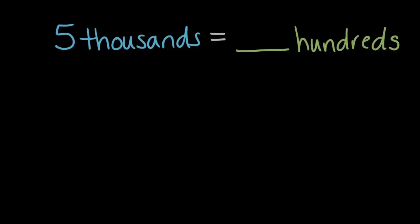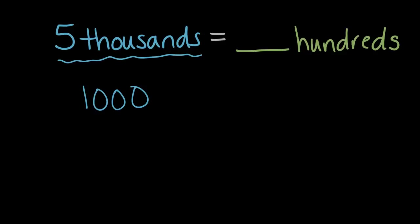Five thousands equals how many hundreds? There's probably a few ways we could take this on, but maybe let's start by thinking about these five thousands. Five thousands is one thousand five times, so let's think about each of those five thousands.